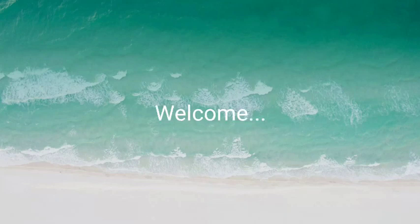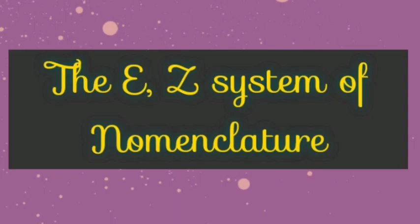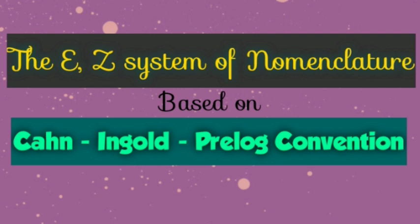In this video we will briefly discuss the E-Z system of nomenclature. The E-Z system, which is based on the priorities of groups using the Cahn-Ingold-Prelog convention, is used to designate diastereomeric alkenes. The terms cis and trans are unambiguous only when used to designate the stereochemistry of disubstituted alkenes.